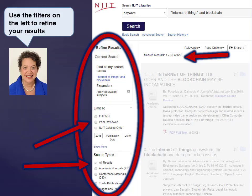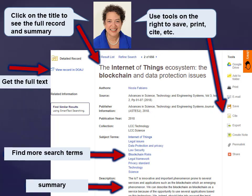Use the filters on the left to refine your results. Click on the title to see the full record and summary. Use the tools on the right to save, print, cite, etc. Get the full text, find more search terms, and read a summary.